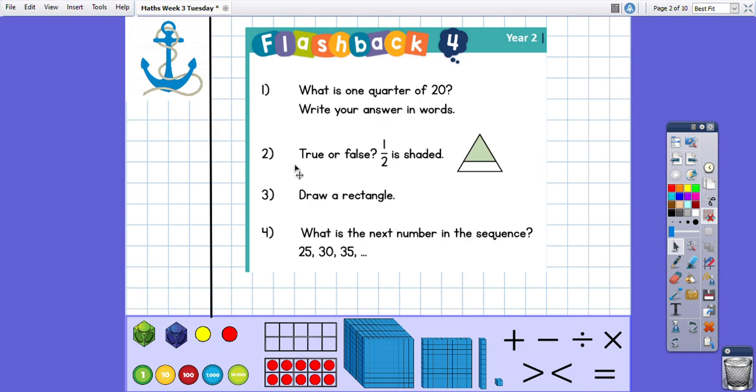Number two, true or false, one half is shaded. So it's asking me if one out of two parts is shaded. Well yes but they are not equal and remember it's really important that when we look at fractions we make sure the parts are equal. And I can see that this shaded part is much bigger than the non-shaded part at the bottom. So false, one half is not shaded.